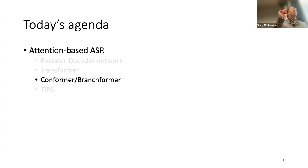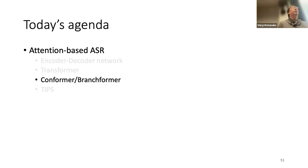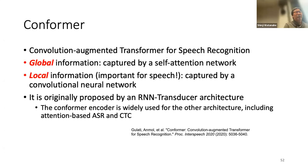In Monday's lecture I was explaining how the transformer changed performance in speech recognition. After that, Google proposed an architecture called Conformer. I will first explain Conformer, and then our group also proposed a work called Branchformer, so we will explain that as well. Conformer is one of the strongest and most widely used architectures in speech processing, originally proposed for speech recognition and now used in many speech processing applications.